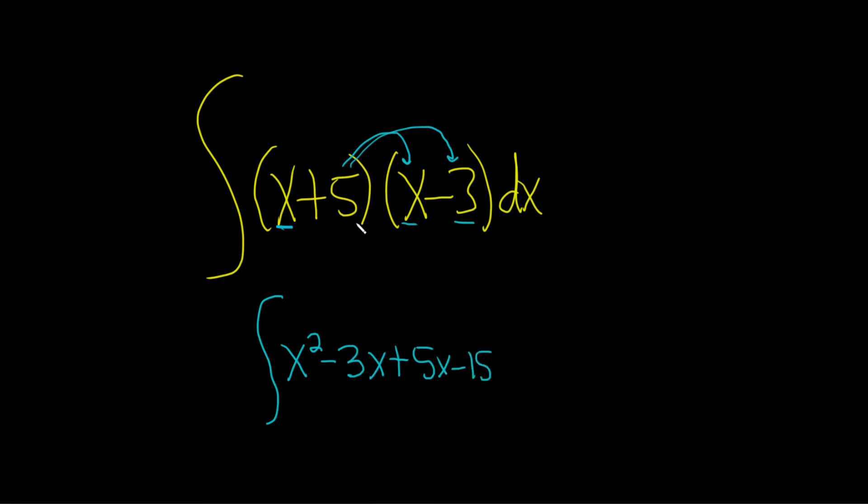Let's just check that. We did x times x that gave us x², x times -3 gave us -3x, 5 times x gave us 5x, and 5 times -3 gives us -15. Close parentheses, and don't forget the dx.